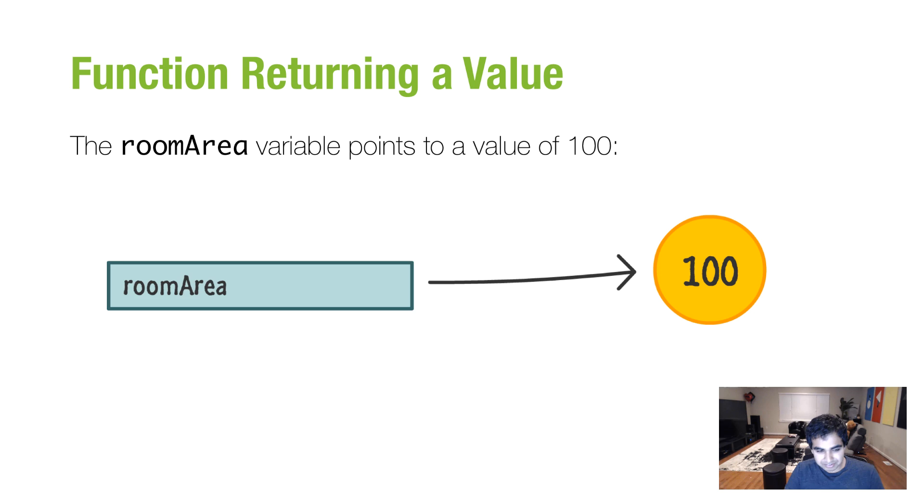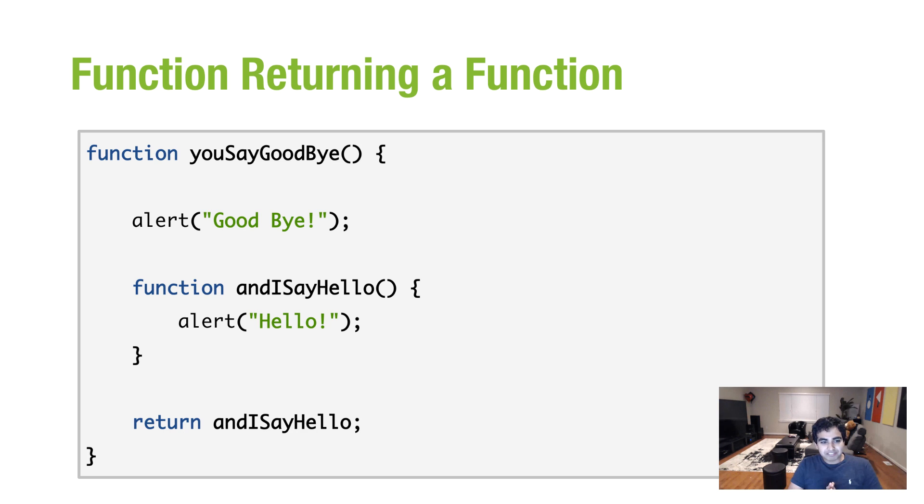So roomArea stores a value of 100. So if you were to run that code, the roomArea variable points to 100, and the alert statement prints the number 100 onto your screen. See? Pretty simple, right? So far. Now, let's talk about a function returning a function. Now we're getting a little bit more complicated.